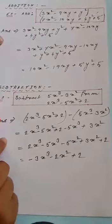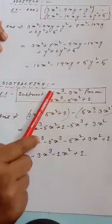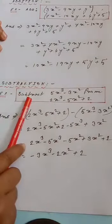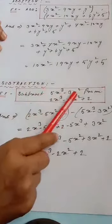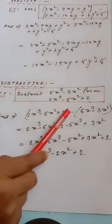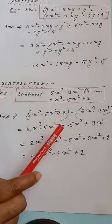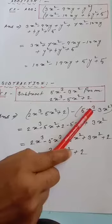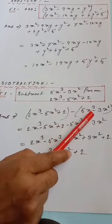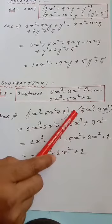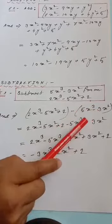Next is subtraction. Before solving subtraction problems, read the question twice. For this example, we subtract the first expression from the second. So the second expression is written first: 2x³ − 5x² + 2 minus the first expression in brackets. Opening the bracket: the sign of 5x³ is plus, so plus into minus gives −5x³. Minus into minus gives +3x².